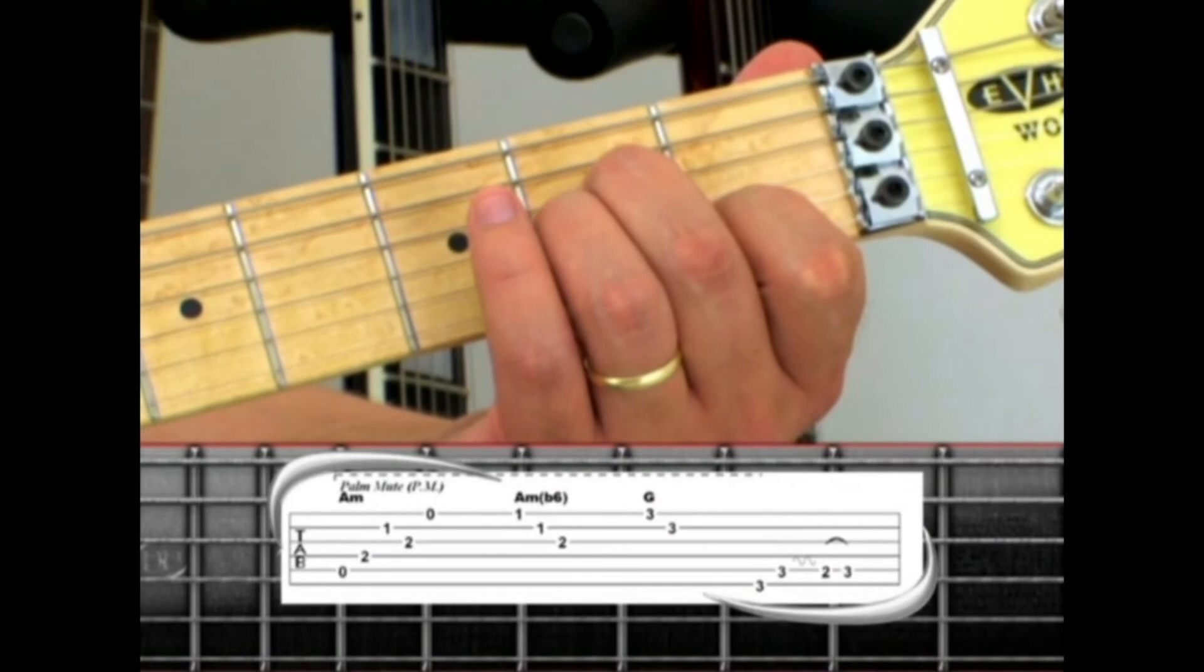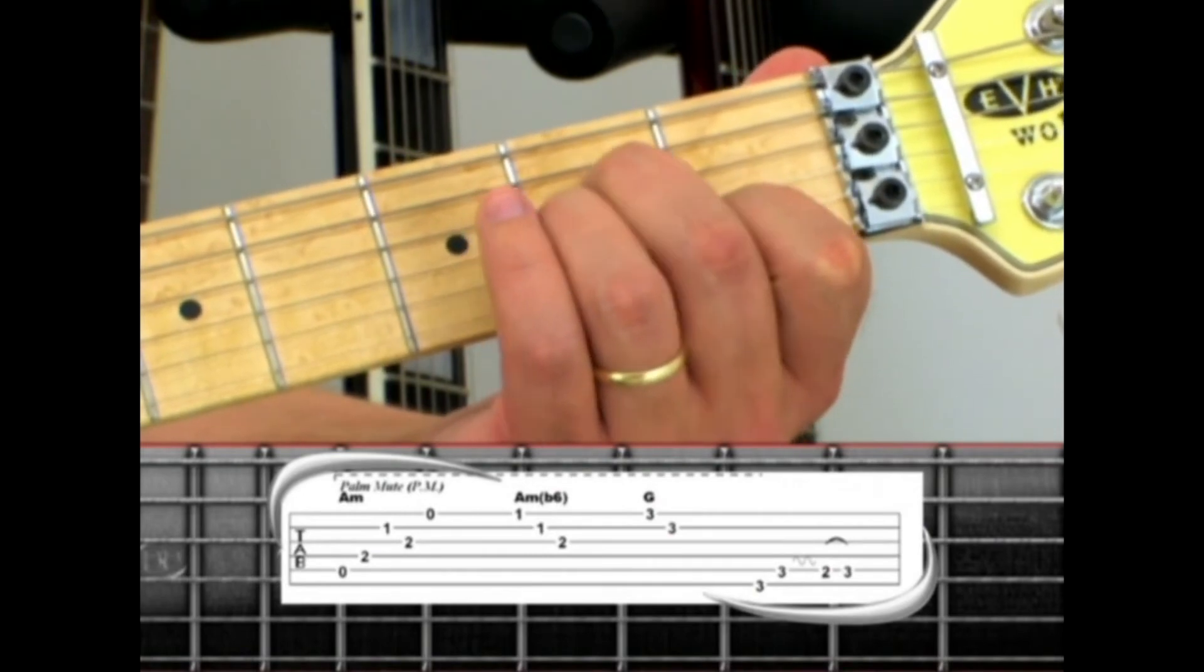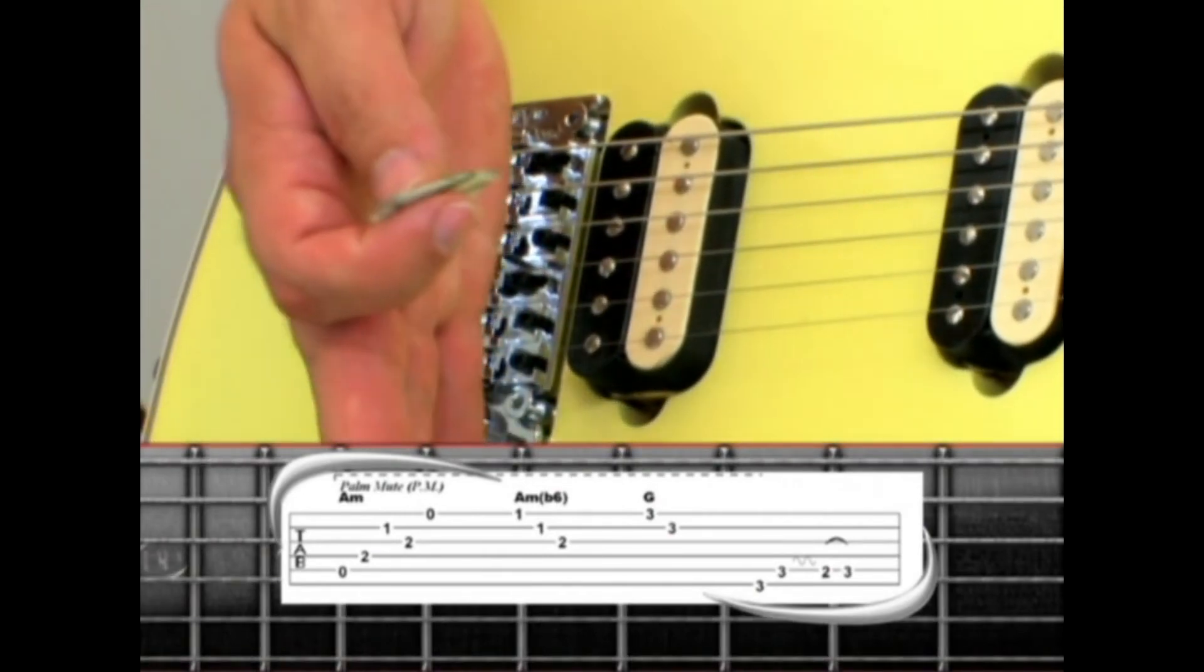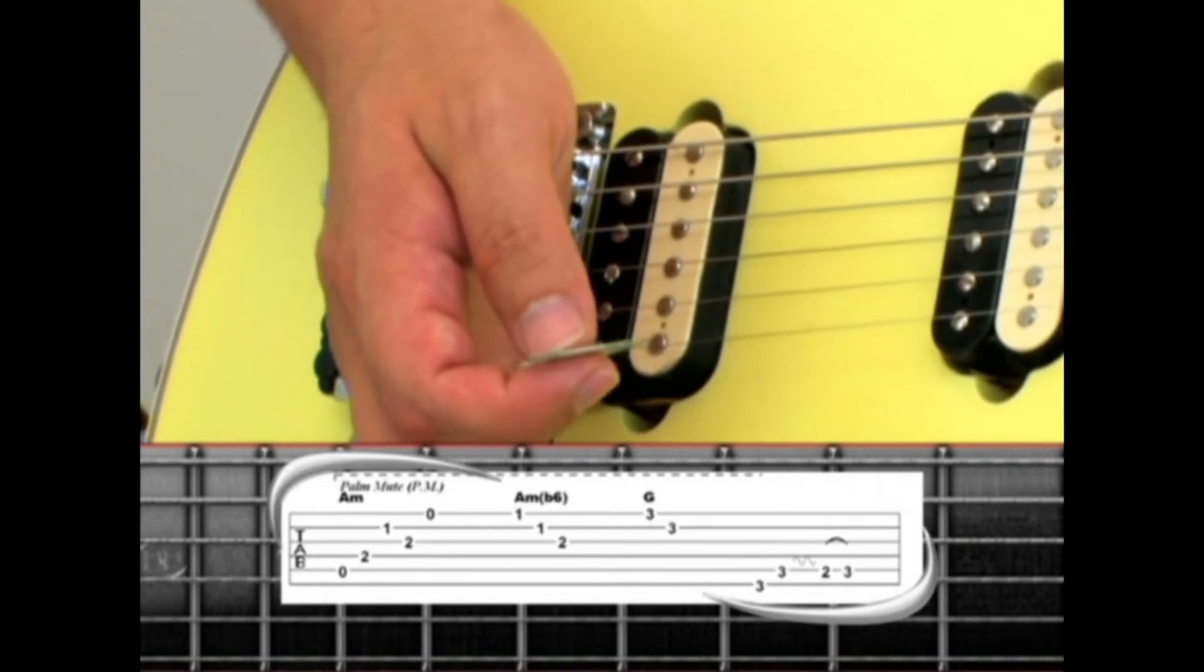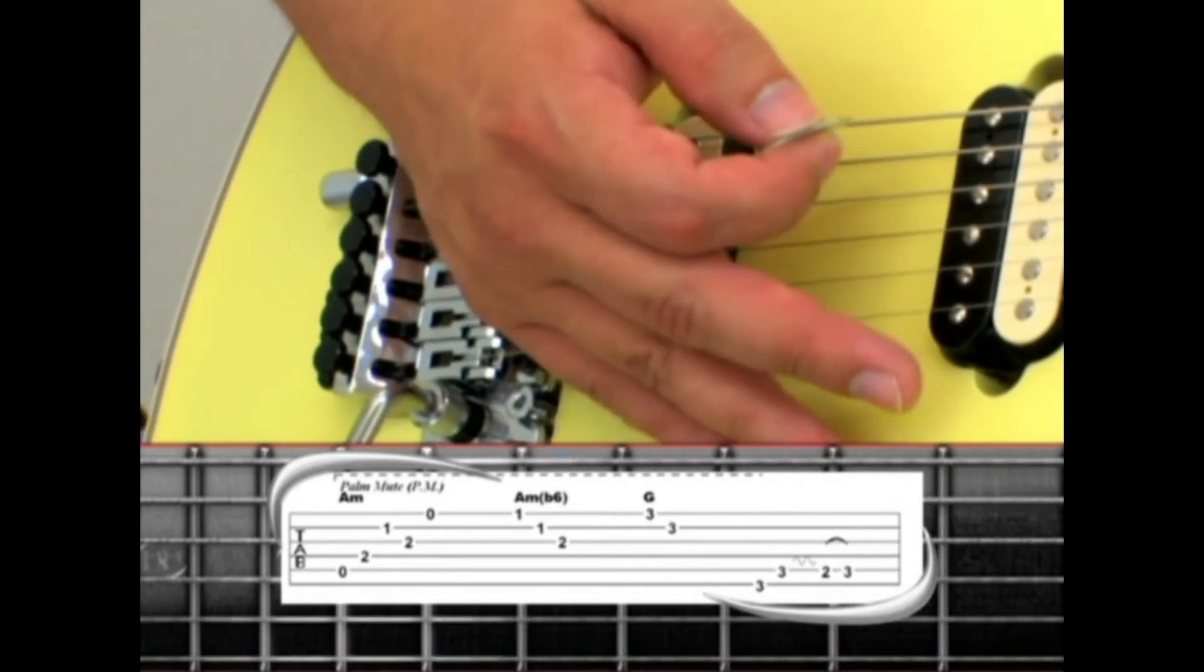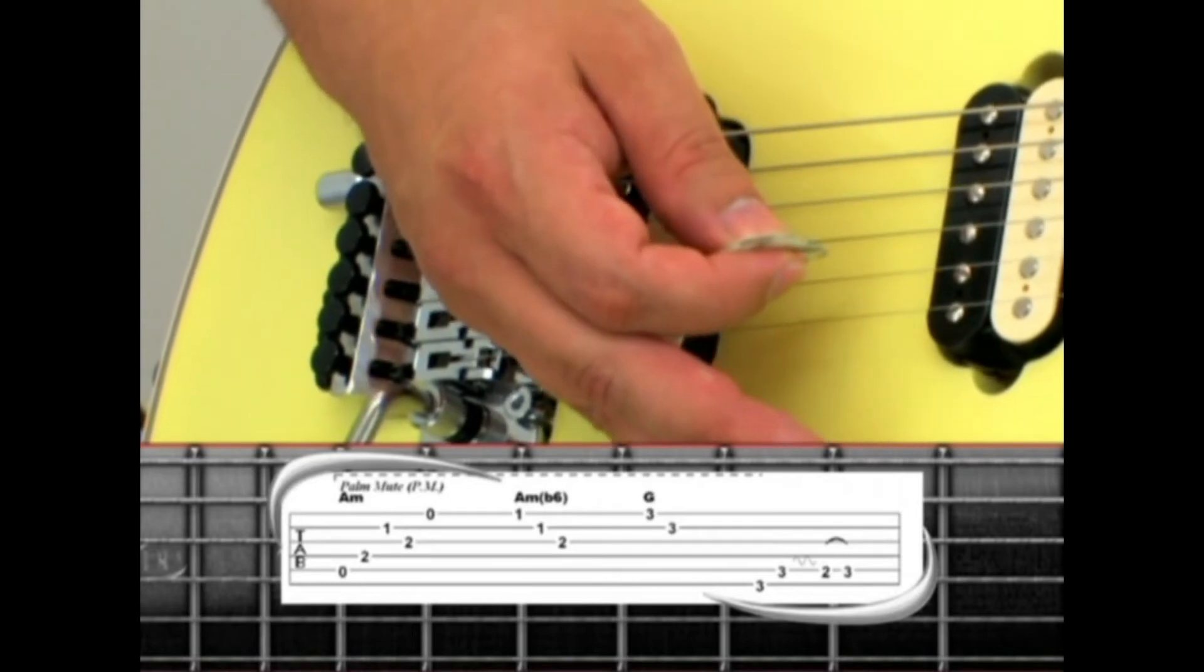Phrase one is the intro to the song. Holding the A minor chord, lay the palm of your picking hand across the bridge to mute the strings. Then pick strings five, four, two, three,